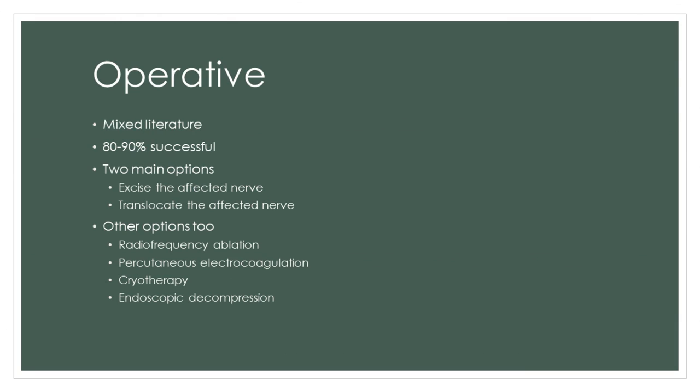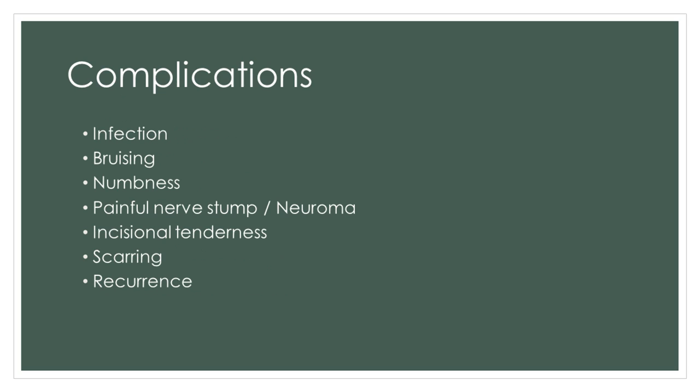In terms of operative treatment, there's quite a mixed literature. More recent papers report 80% to 90% success rates, and there are two main options: either removing the affected nerve, which is called excision, or moving it, which is called translocation. There are other options as well, such as radiofrequency ablation, percutaneous electrocoagulation, cryotherapy, and endoscopic decompression, however the main literature revolves around excision or translocation. In terms of potential complications, it's always important to consider these when thinking about surgery, and these will include infection and bruising, persistent numbness, painful nerve stumps, neuromas, incisional region tenderness, scarring, and of course recurrence.